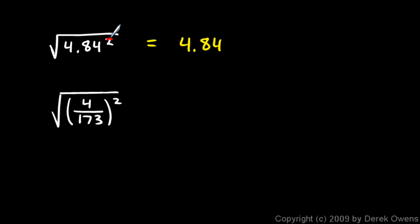Because if you take anything and you square it and square root it, you just get that original thing. Same thing happens down here. The square root of 4 over 173 squared just has to equal 4 over 173. Because the square and the square root undo each other.